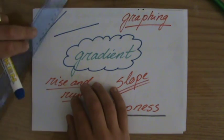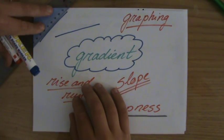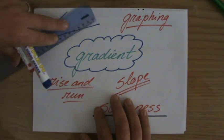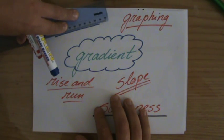So the steeper the line, the higher the gradient. So this line will have a higher gradient, or a bigger gradient, compared to that line, because it's steeper.